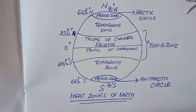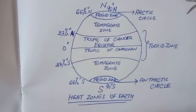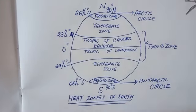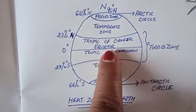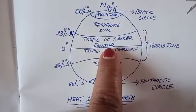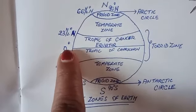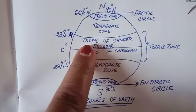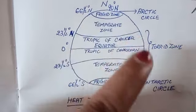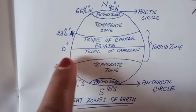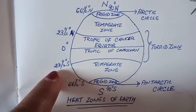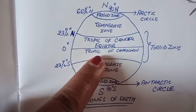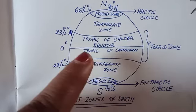In this video I am going to discuss about the degrees where the heat zones of earth are present. The equator is present at 0 degree. Between 0 degree to 23 and a half degree north, the Tropic of Cancer is present at the north. Between 0 degree to 23 and a half degree south, the Tropic of Capricorn is present at the south.